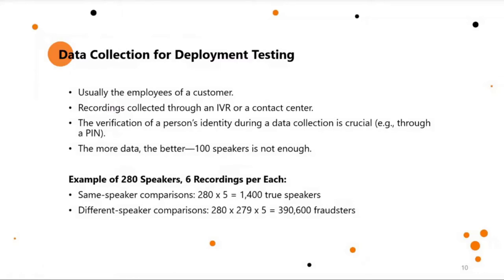What is crucial is the data collection, because the technology is more precise than humans. If you make a mistake in data collection — for example, if people are able to provide recordings under different identities — you can never fix it and need to start from scratch. For the dataset, 100 speakers is not enough.